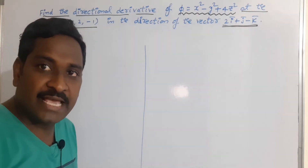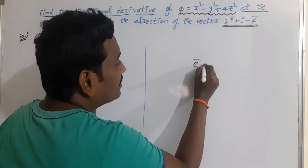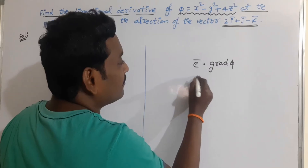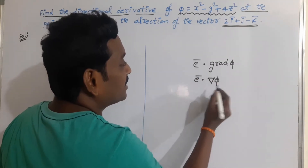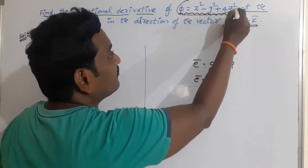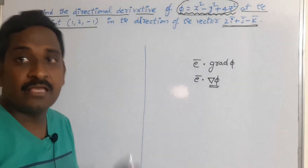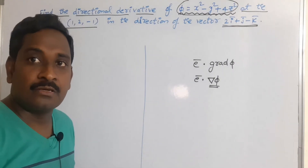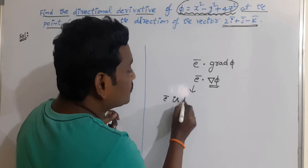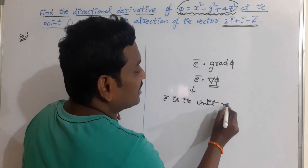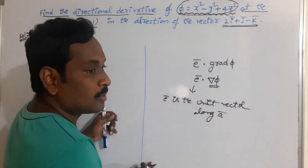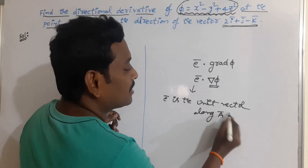The directional derivative of a scalar function is ē · grad φ. In symbolic form, it becomes ē · ∇φ. We know that ∇φ is the gradient of the given scalar function φ. First, we should find out the gradient of the given function φ using the definition. After that, we have to find ē — the unit vector along the direction of the given vector a.